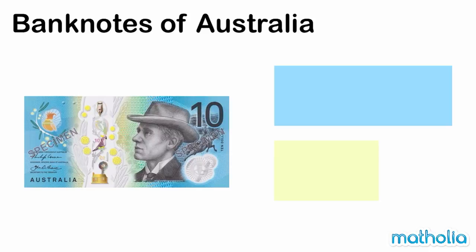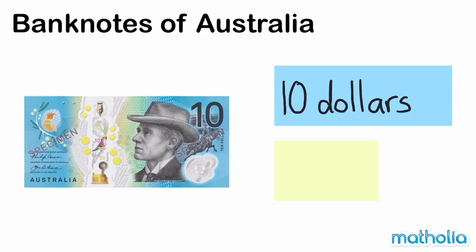What colours can you see on this banknote? This is a ten dollar note. Ten dollars. We write ten dollars like this.